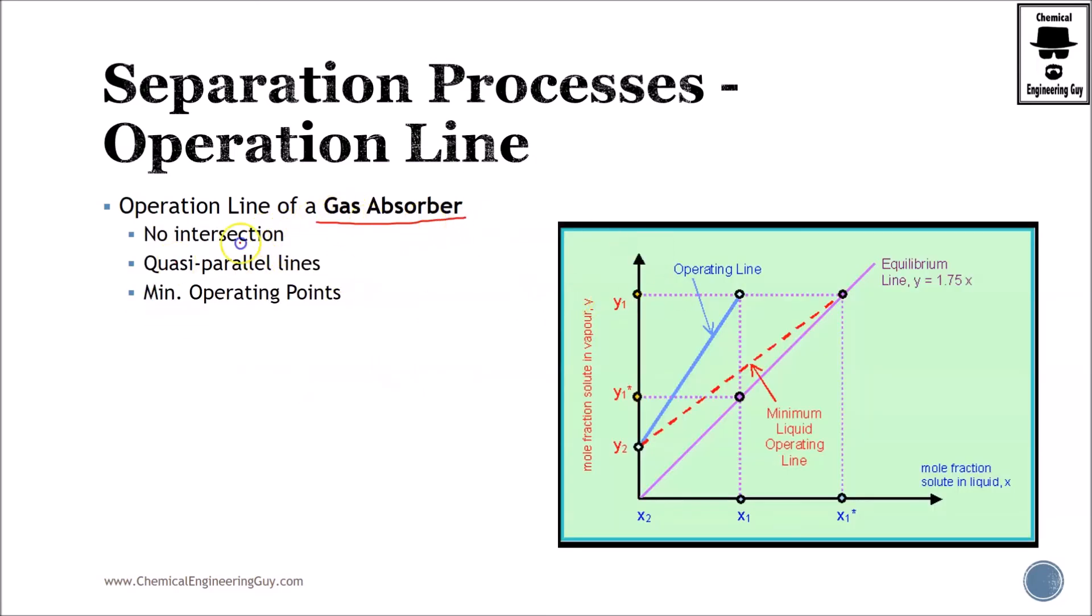In the gas absorber, if you remember, there is no intersection between the lines. Hopefully you know why. I'm not going to explain to you. They are quasi-parallel lines. Of course, you know that eventually they get nearer and nearer. The difference between these two points get each time shorter and shorter. And you got minimum operation points, which is interesting. You can get those depending on the type of operation, not always.